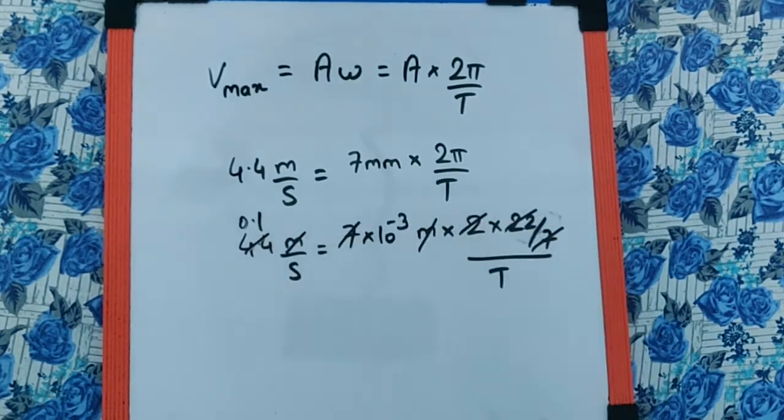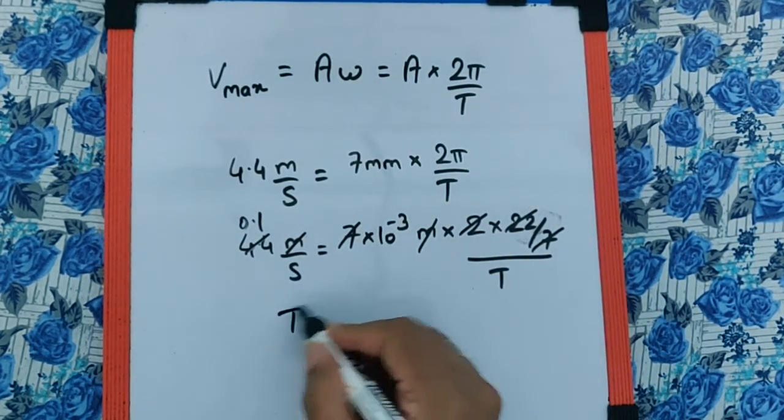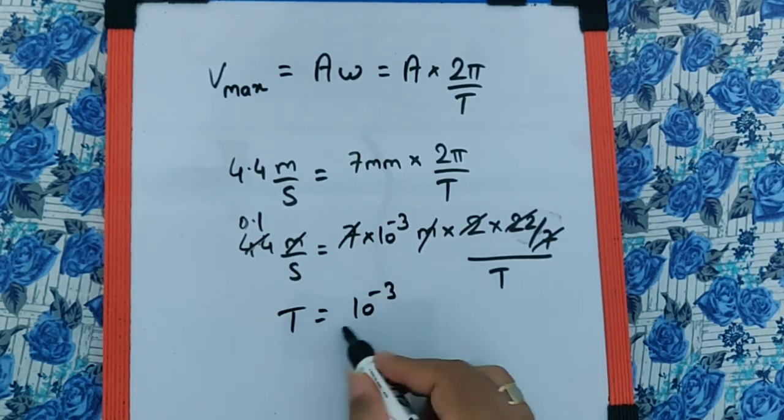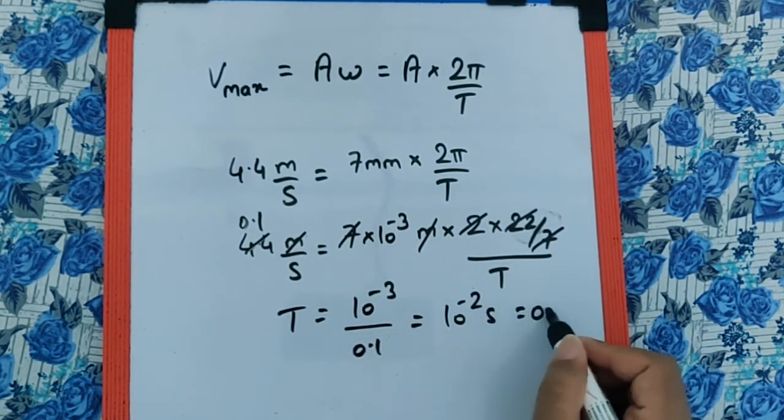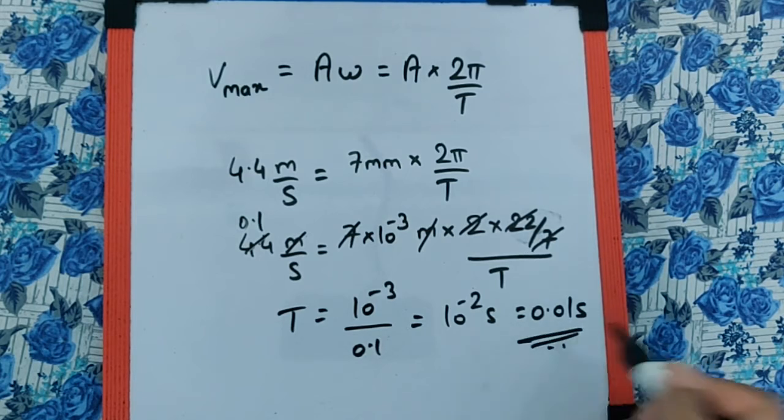We get T = 10^-3 / 0.1 = 10^-2 seconds, which is 0.01 seconds as the final answer.